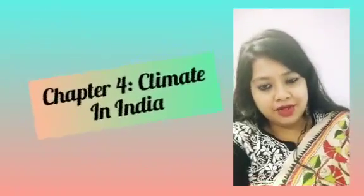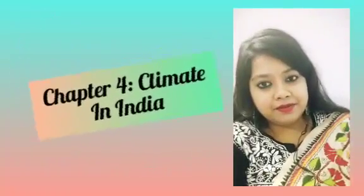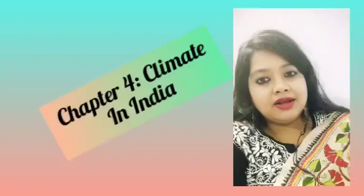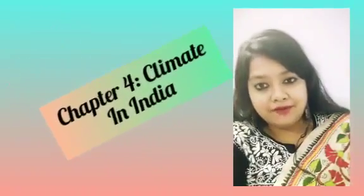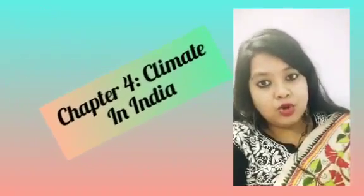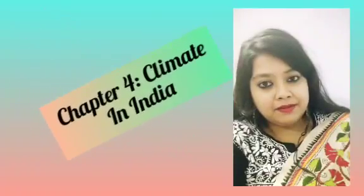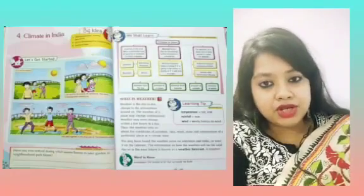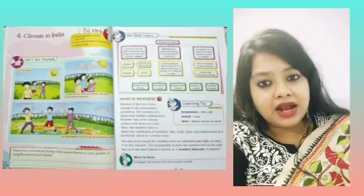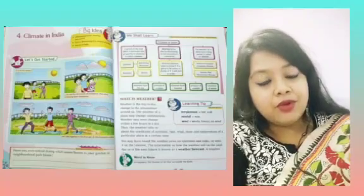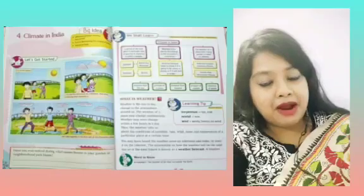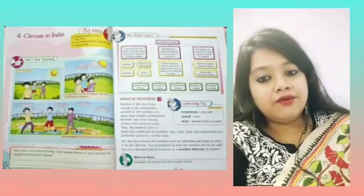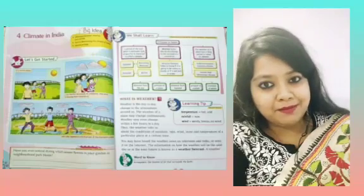Today I thought of starting with Chapter 4, which deals with climate in India. You need to know about our climate regime and climatic characteristics. We need to understand better about our livelihood, food, clothing, and everything else. Climate is a physical factor on which every other thing depends. So in this chapter, we are going to learn about different parameters that control climate, seasonal variations, and their effects on our lives.